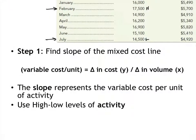So step one in the high-low process is to find the slope of the mixed cost line. Now if you remember back from your algebra class the slope is rise over run, or in this case the change in cost which is y, change in y, divided by the change in volume which is x or activity level. So the slope represents the variable cost per unit of activity and we use the high-low levels of activity like we said before to figure out the slope of the line. So we're going to take the change in cost divided by the change in volume of these two points.